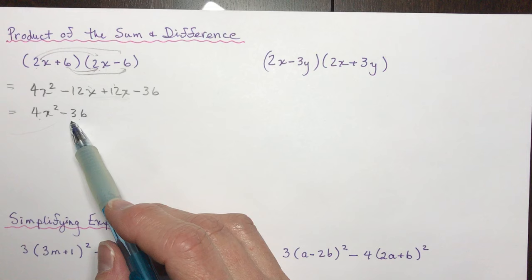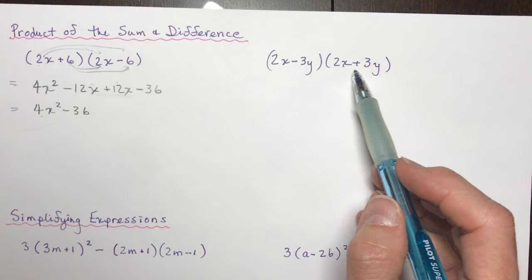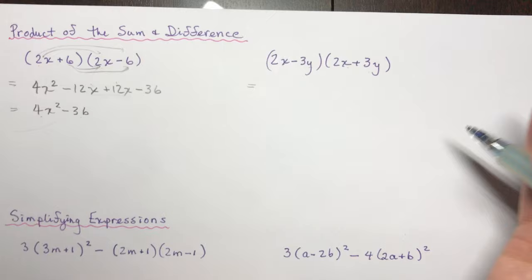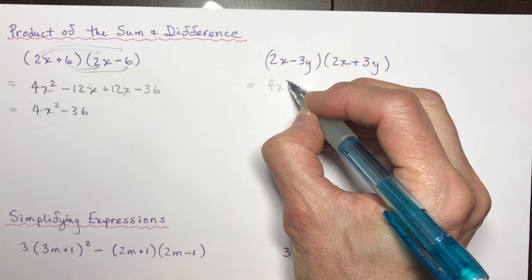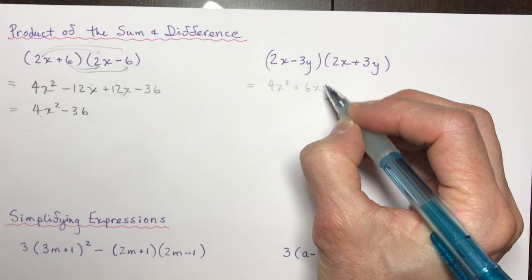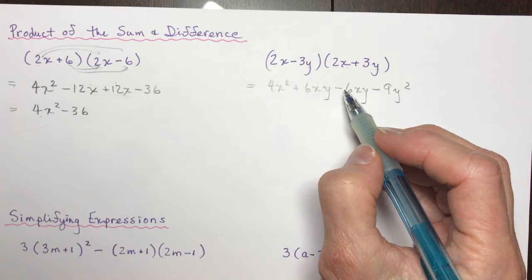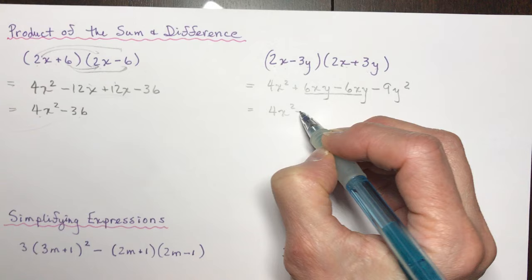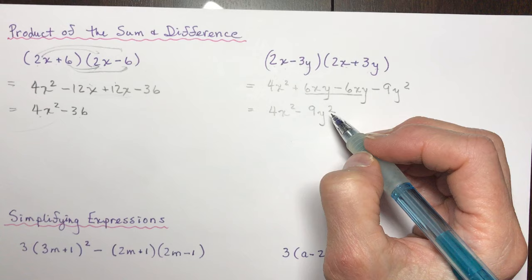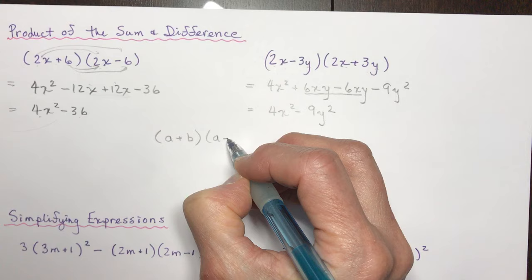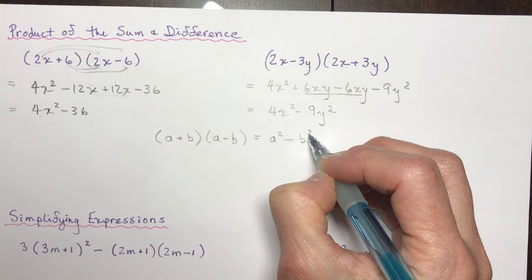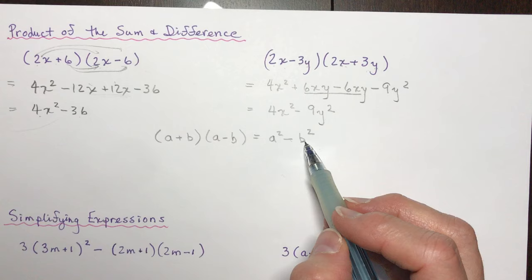Let's see the pattern again with (2x − 3y)(2x + 3y): 2x times 2x is 4x squared; 2x times 3y is +6xy; −3y times 2x is −6xy; and −3y times +3y is −9y squared. The middle terms cancel, leaving 4x squared − 9y squared. The pattern is: (a + b)(a − b) = a squared − b squared. When we work this backwards it's called a difference of squares.